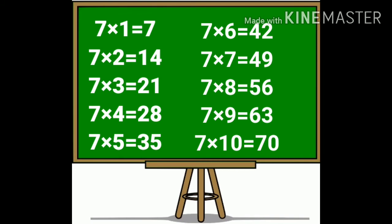Again, 7 1's are 7. 7 2's are 14. 7 3's are 21. 7 4's are 28. 7 5's are 35. 7 6's are 42.